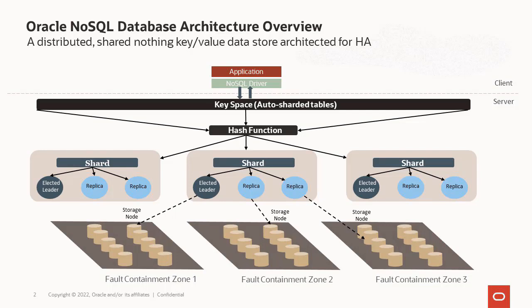What we call the physical devices are storage nodes. Moving up, the rectangular boxes represent our shards. In the cloud service we have 16 shards; on-premise you can control the number. Shards are made up of what we call replication nodes — the circles annotated under each shard in the diagram. We have two kinds: elected leaders and replicas. We highly recommend at least three replication nodes per shard, which is what we use in our cloud service, though some on-premise customers use as many as five.